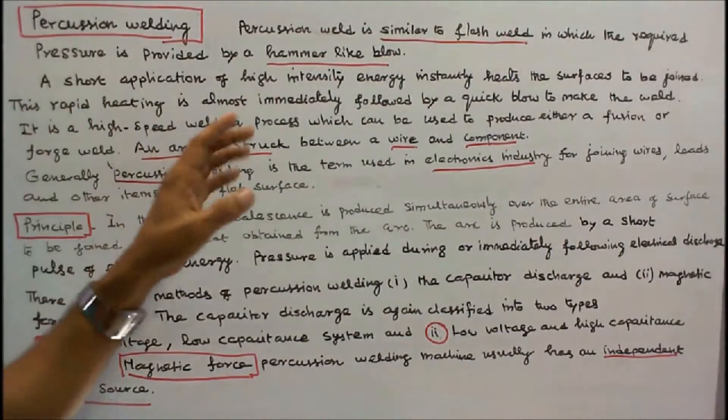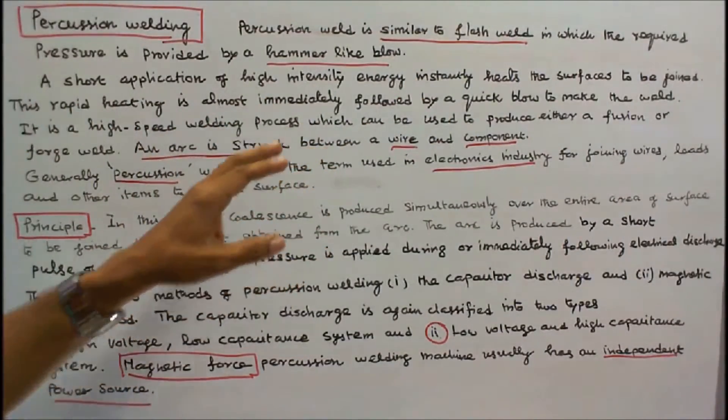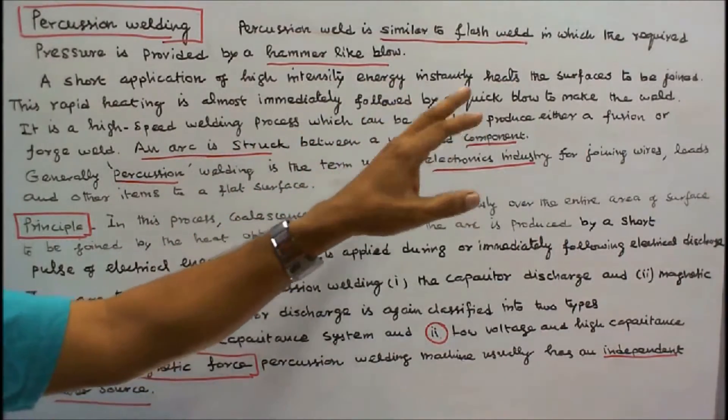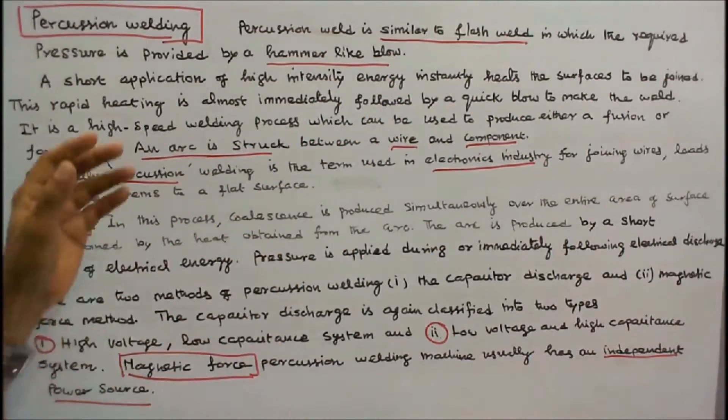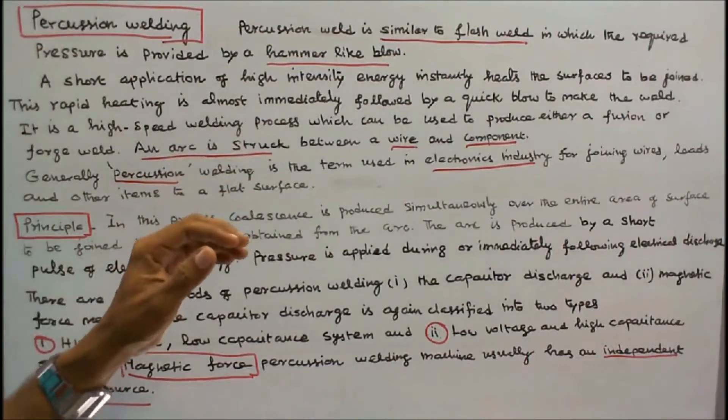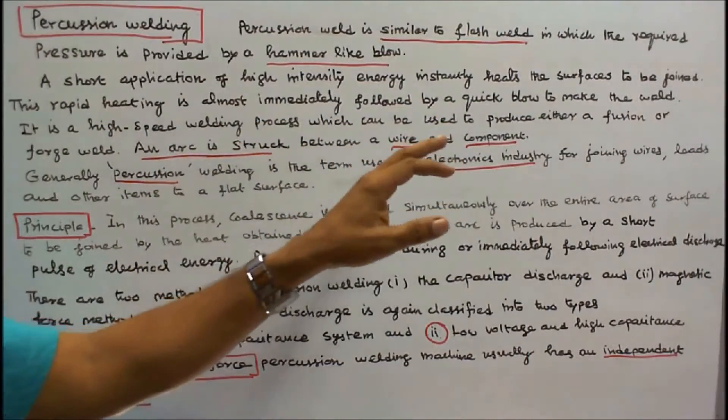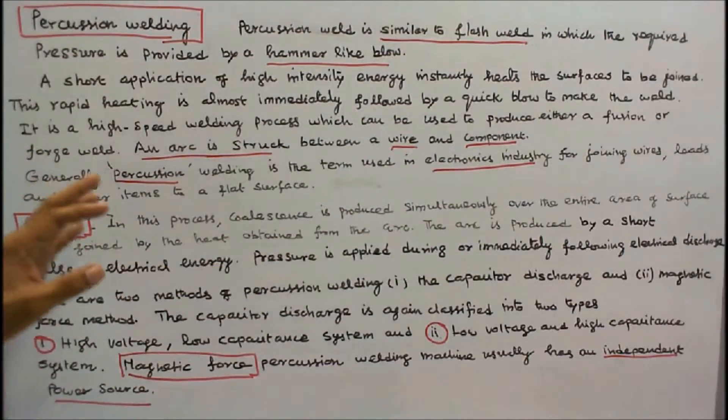The rapid heating is almost immediately followed by a quick blow to make the weld. It is a high-speed welding process which can be used to produce either a fusion or a forge weld.